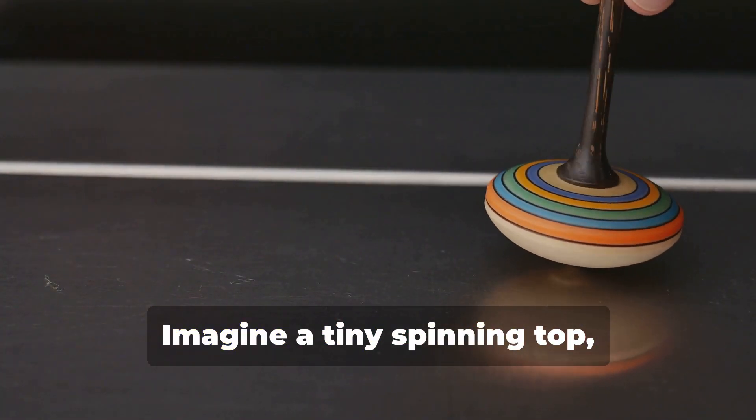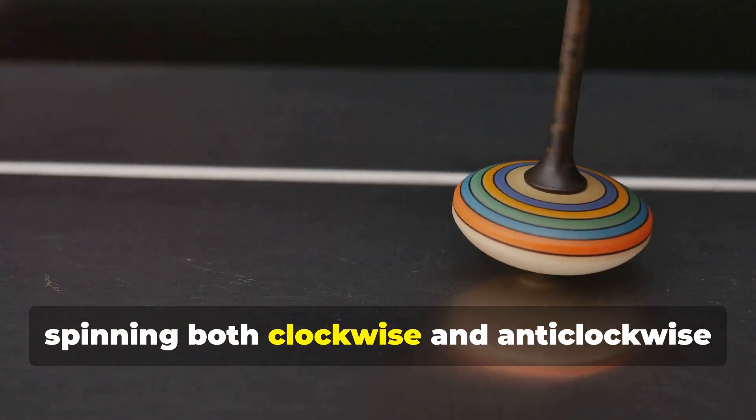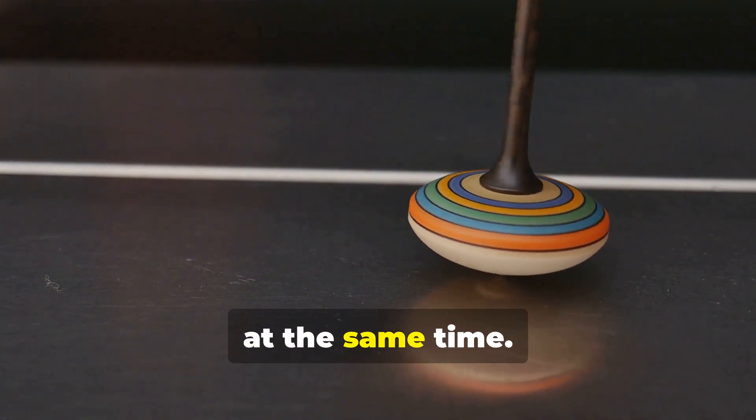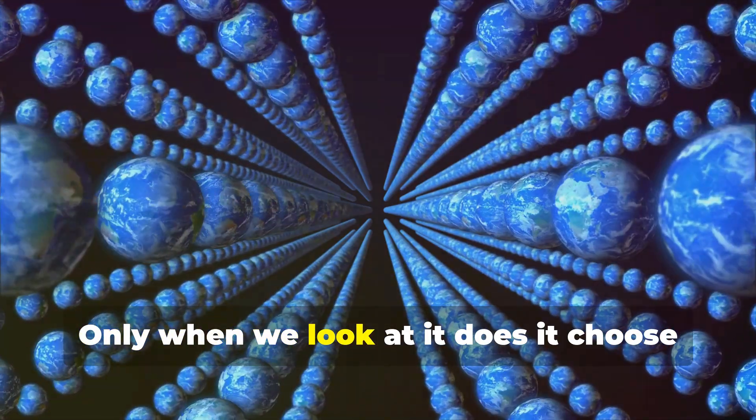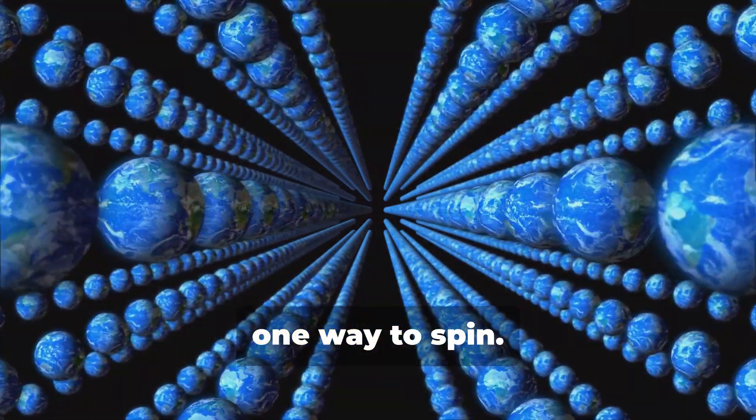Imagine a tiny spinning top, spinning both clockwise and anticlockwise at the same time. Only when we look at it does it choose one way to spin.